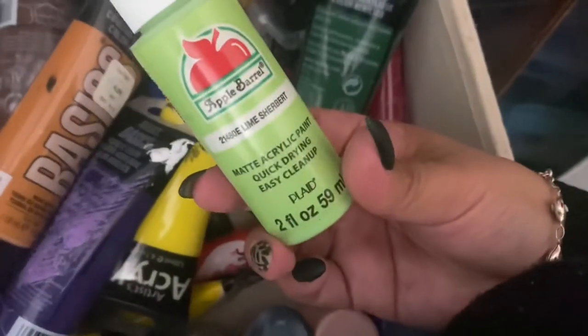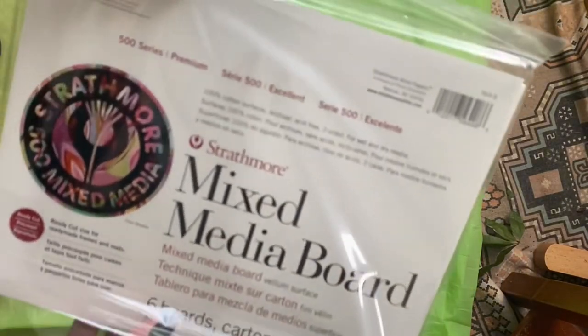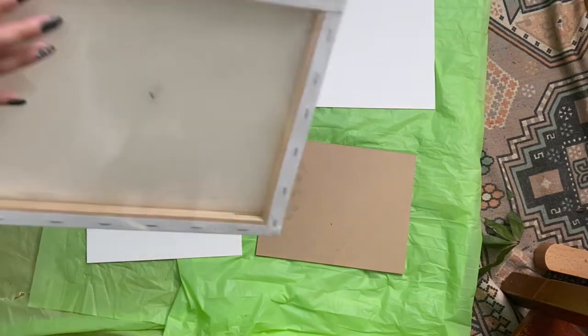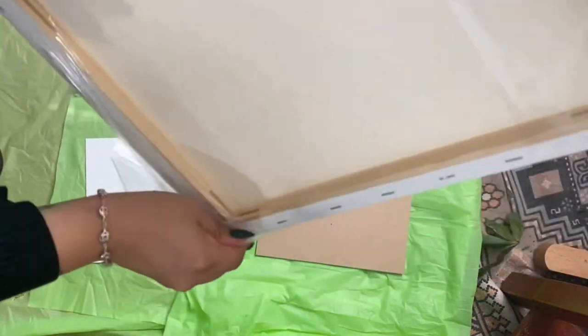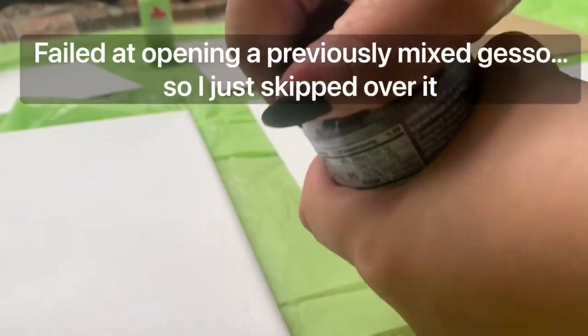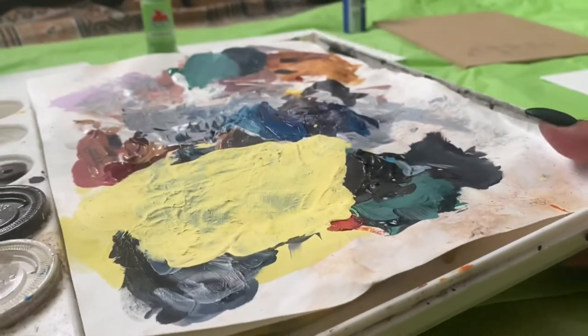I usually tend to lean towards the warmer colors, but today we'll go on the cooler side. I pour my white gesso onto a dried out palette and add a few drops of acrylic paint and use a palette knife to mix the color into the gesso.